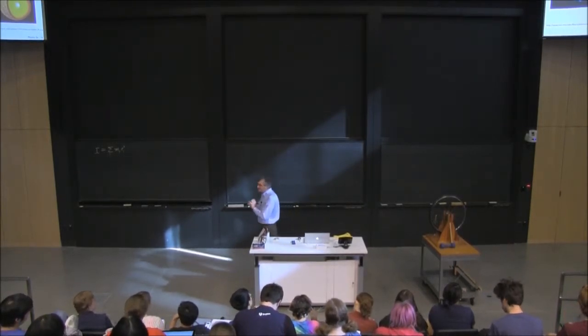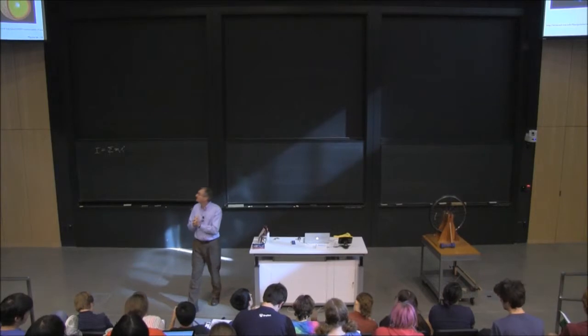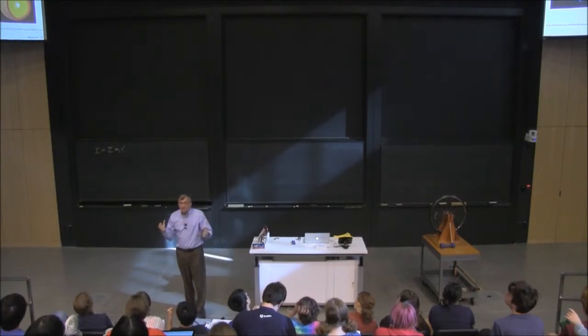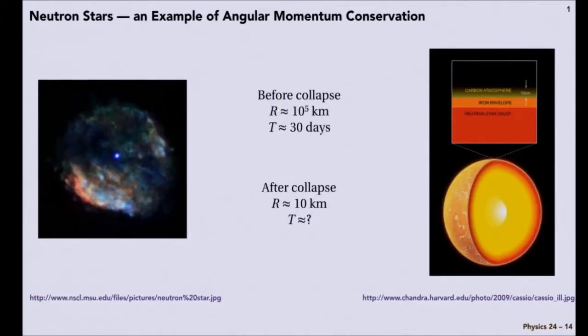And it continues to collapse and produce from an initial star of radius something like 10 to the 5 kilometers, a little ball. And there's an example picture of a little neutron star and the cloud of junk that was emitted as it was collapsing. And instead of having a radius of 10 to the 5 kilometers, it now has a radius of 10 kilometers.